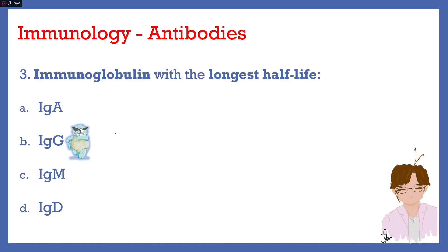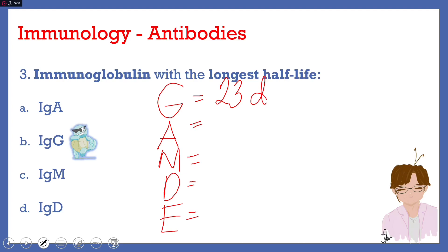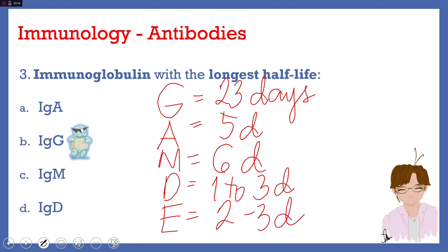Alright, we remembered the concentration of our antibodies by using the mnemonic GAMDE, right? And so in this order also, let us enumerate the half-lives of each of these antibodies. As we said, IgG has the longest half-life and that will equal to 23 days. We have IgA with 5 days. We have IgM, 6 days. IgD, 1 to 3 days. And IgE, 2 to 3 days. So answer here will be letter B, IgG.